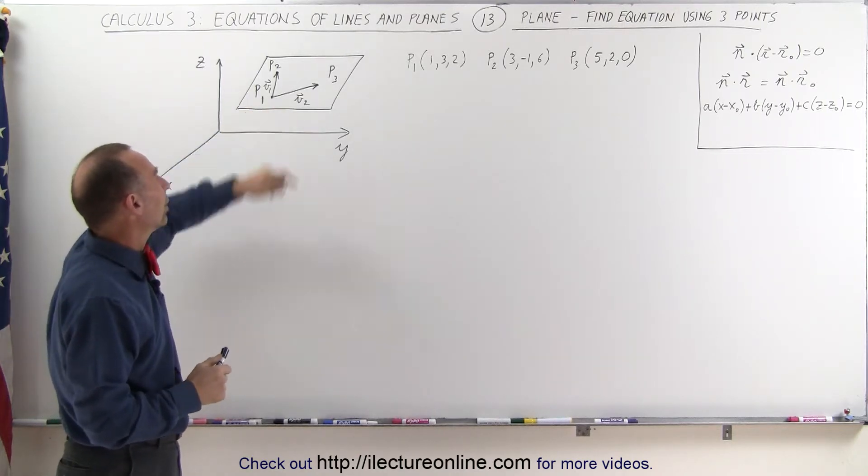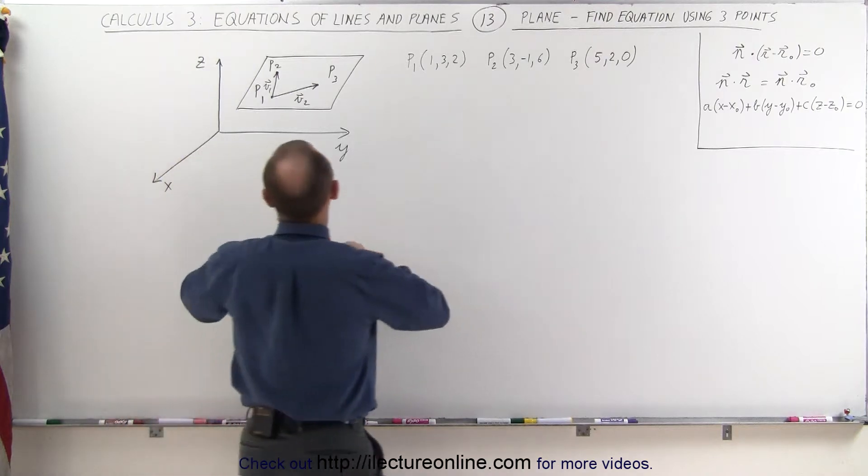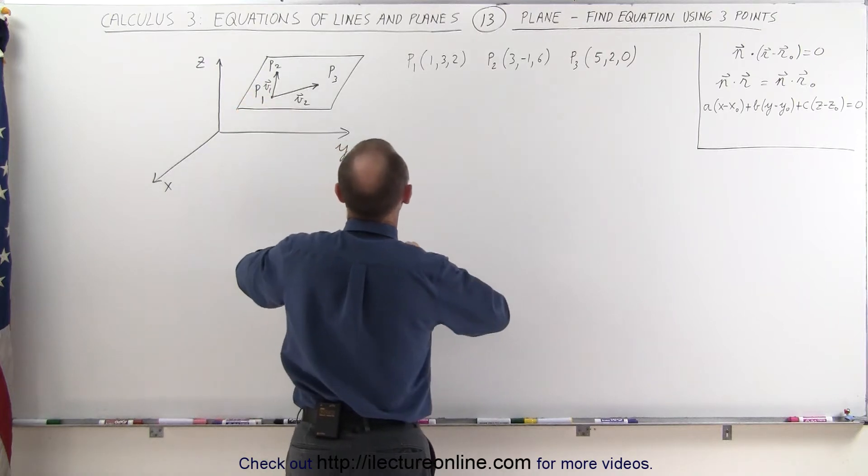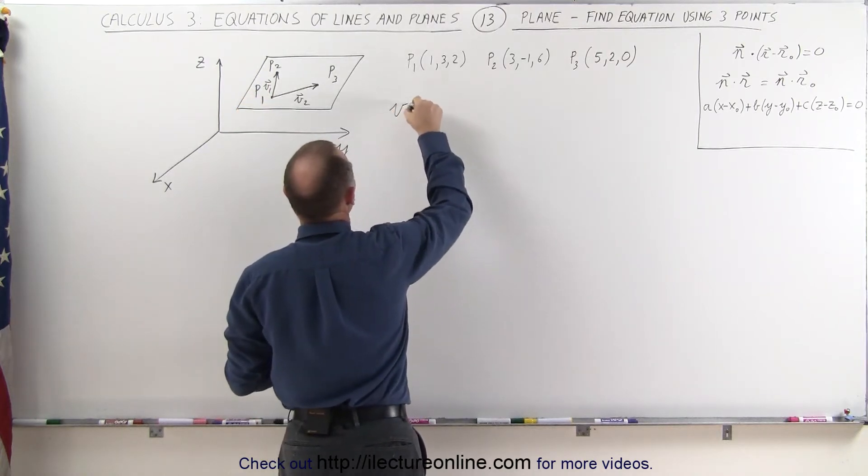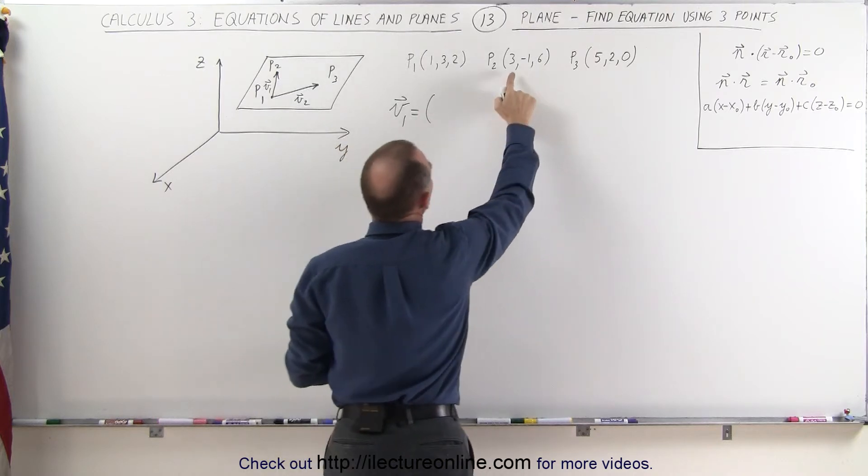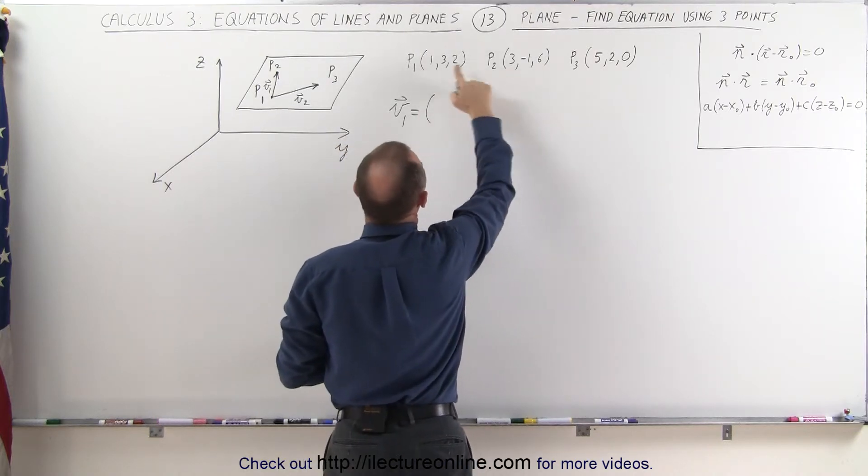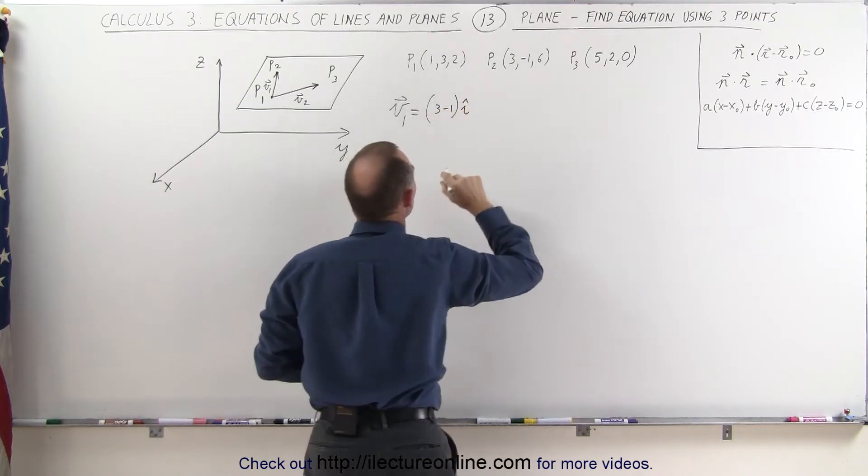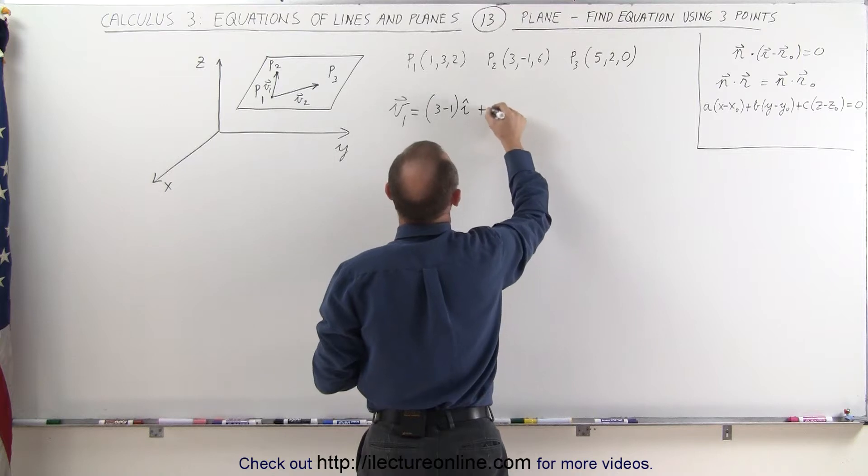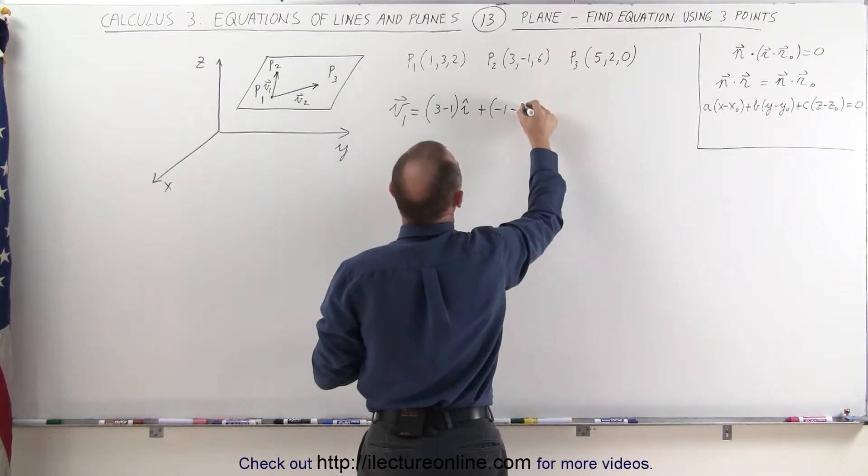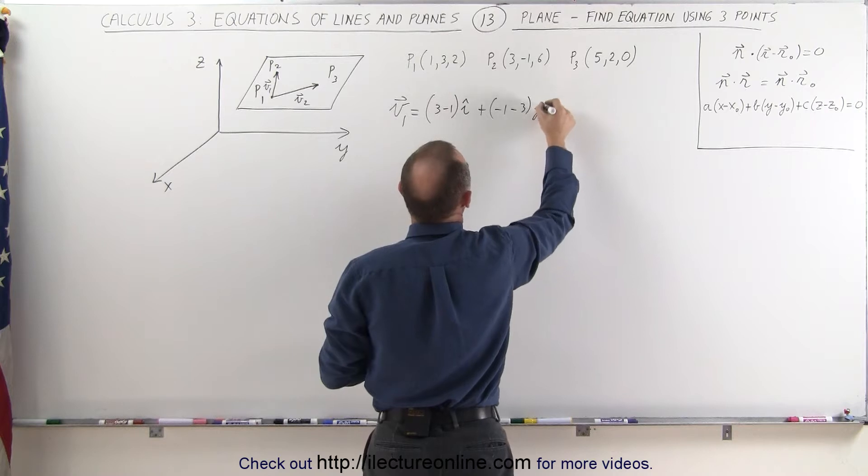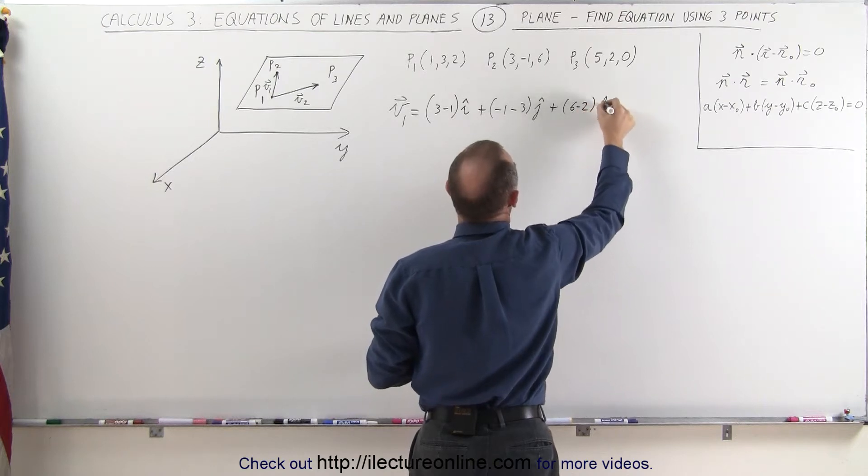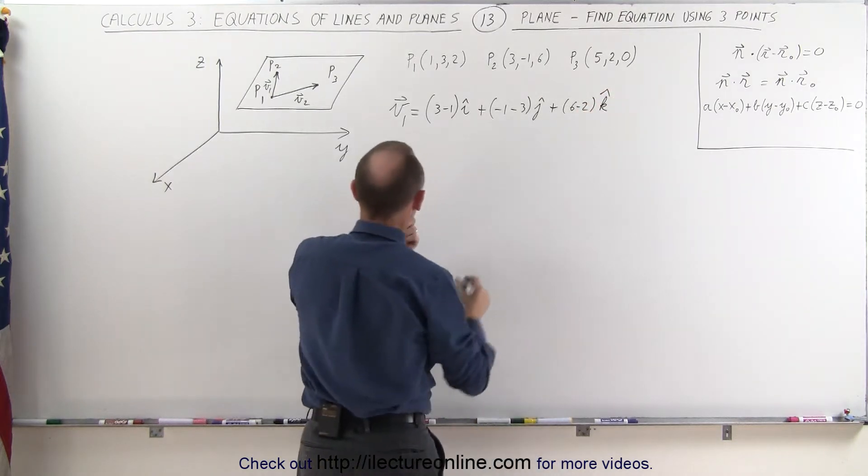So let's first define v1 and v2. v1 can be defined by taking the coordinates of point 2 and subtracting from those the coordinates of point 1. In other words, v1 is equal to the x-coordinate of point 2 minus the x-coordinate of point 1. That would be 3 minus 1 times the i unit vector. Then plus, minus 1 minus 3, that would be the j vector right here.